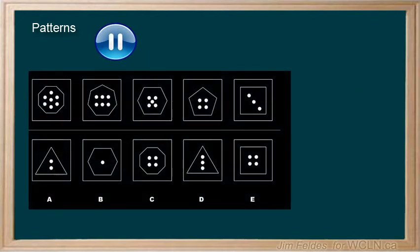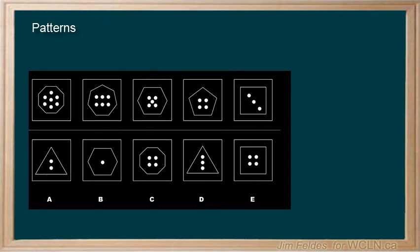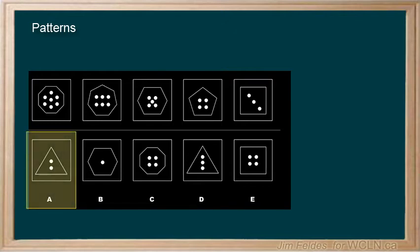This one is similar. Pause and give it a try. Of course, the number of sides and dots are both diminishing by one, so A would be the next shape.